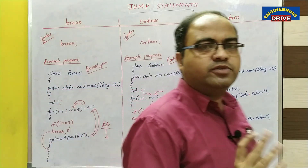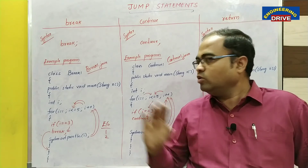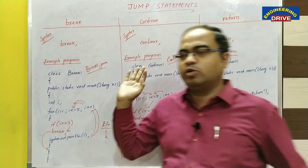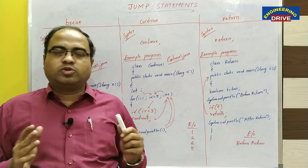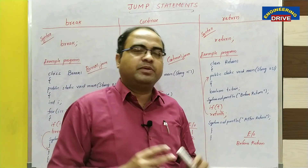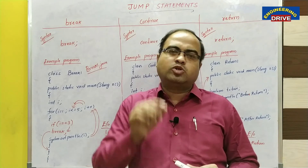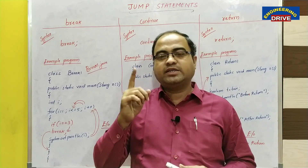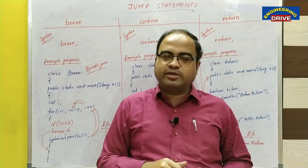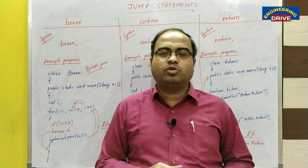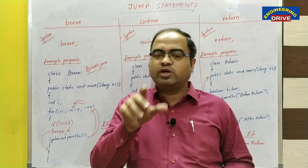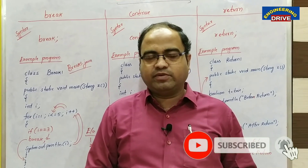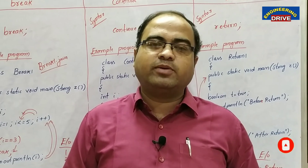Looking at all three types of jump statements, we see one common pattern: they are used to change the order of execution of statements. If we want to change the order of execution, we can use break, continue, and return keywords. I believe you have got a clear picture about these three types of jump statements in Java. Today's question: who is the developer of Java programming language? Put your answer in the comment section. See you soon everybody, take care.